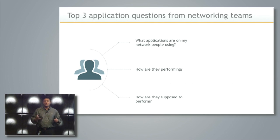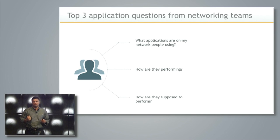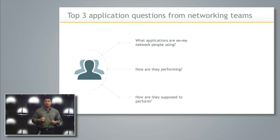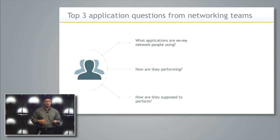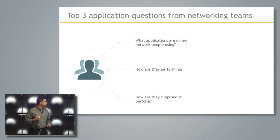The second question is how are those applications performing? My wife calls me and says 'the network's broke' — what does that mean? Then most importantly, how are they supposed to perform? All of a sudden I'm getting complaints. This isn't working as well as yesterday. What is normal? How do we establish that application performance baseline? Very, very critical things.